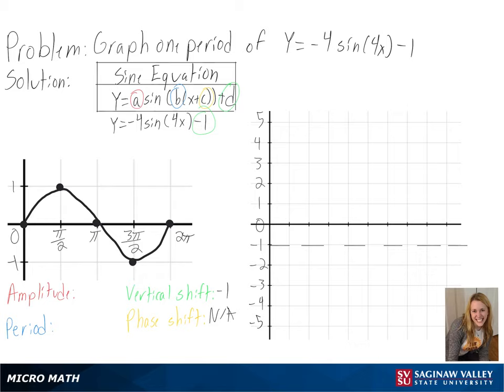Next, we have an amplitude of negative 4, and we can tell that our graph will have its highest and lowest points 4 units from the center.